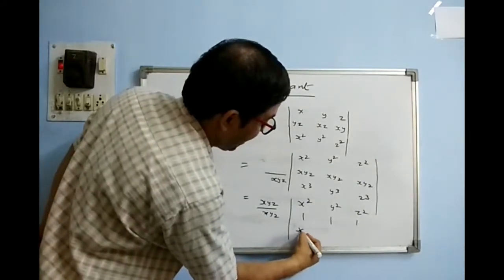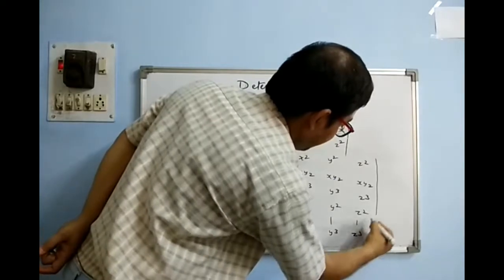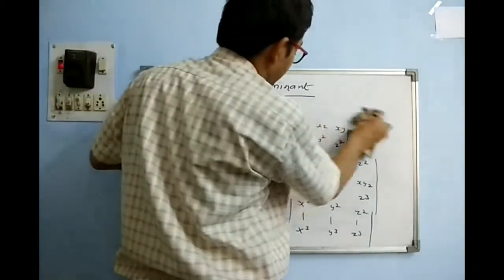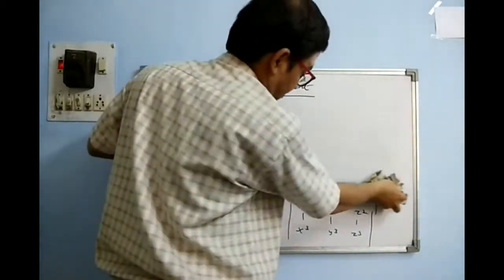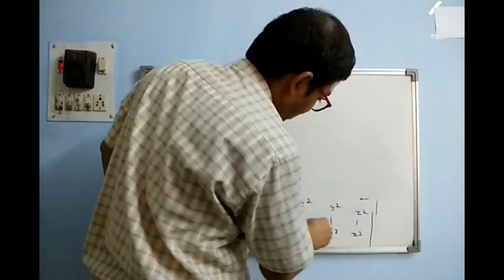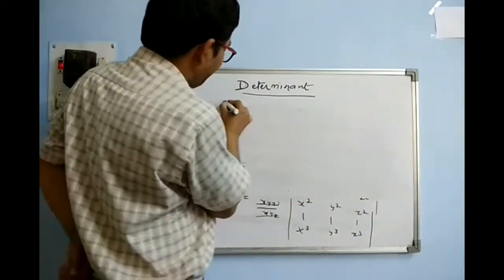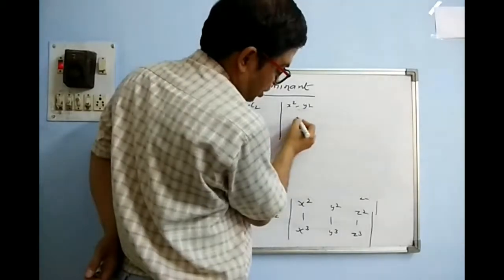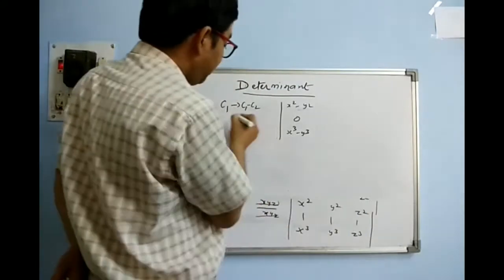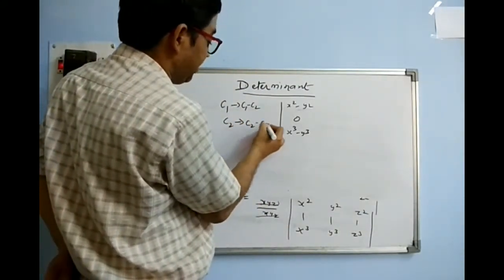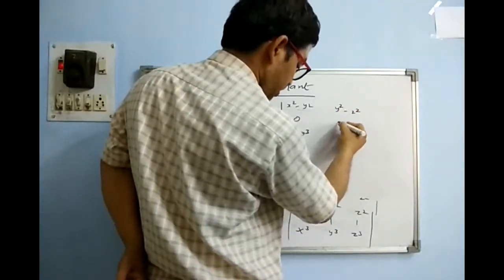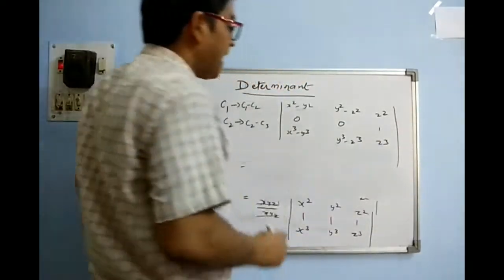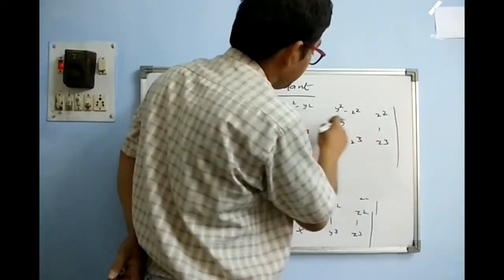Now performing operations to make two zeros: at C1, do C1 minus C2, giving x²−y², 0, x³−y³. At C2, do C2 minus C3, giving y²−z², 0, y³−z³. Column 3 stays z², 1, z³. We can now expand along R2 since two zeros are there. In between, take common factors: from C1 take (x−y), leaving x+y and x²+y²+xy. From C2 take (y−z), leaving y+z and y²+z²+yz.